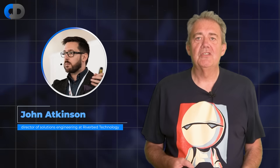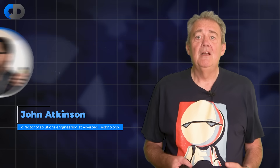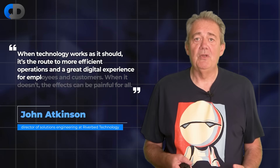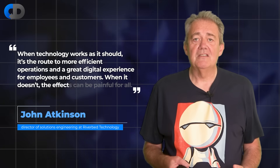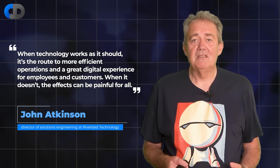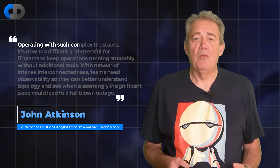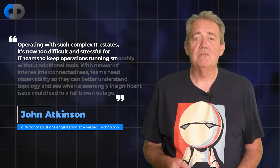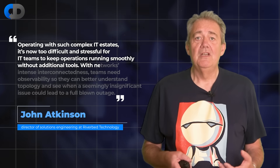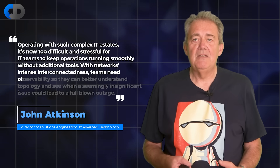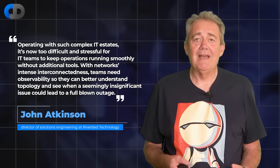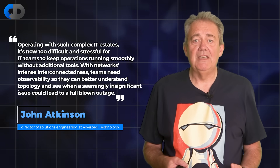John Atkinson, Director of Solutions Engineering at Riverbed Technology, was quoted as saying: 'When technology works as it should, it's the route to more efficient operations and a great digital experience for employees and customers. When it doesn't, the effects can be painful for all.' I disagree. He goes on to say: 'Operating with such complex IT estates is now too difficult and stressful for IT teams to keep operations running smoothly — without additional tools. With networks' intense interconnectedness, teams need observability so that they can better understand topology and see when a seemingly insignificant issue could lead to a full-blown outage.' I still disagree, and I'll explain why later in the video.